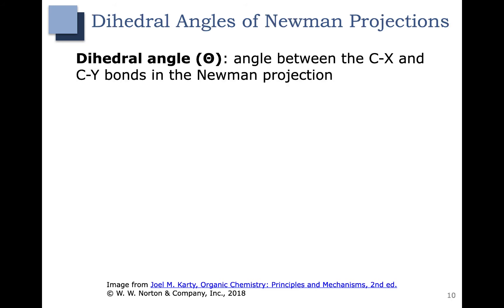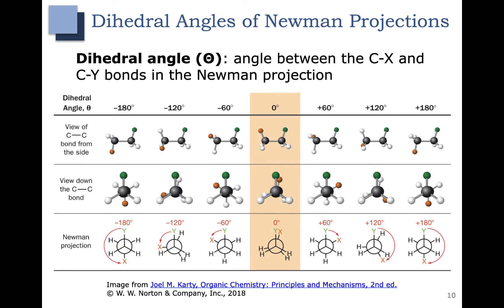The term dihedral angle is used to explain the angle between groups or bonds in the Newman projection. When you rotate the molecule so the groups are eclipsed in the Newman projection orientation, we call that a dihedral angle of zero. When the back group is rotated 60 degrees, we consider it to have a dihedral angle of 60 degrees — that's a staggered conformation. Rotating a little more gives eclipsed at 120 degrees, and then another staggered at 180 degrees.